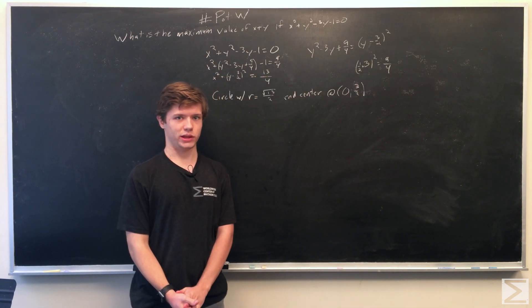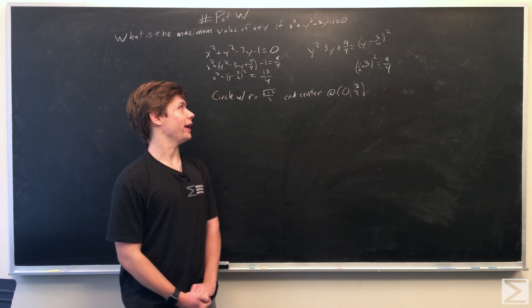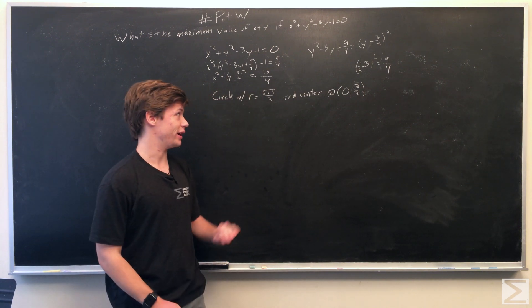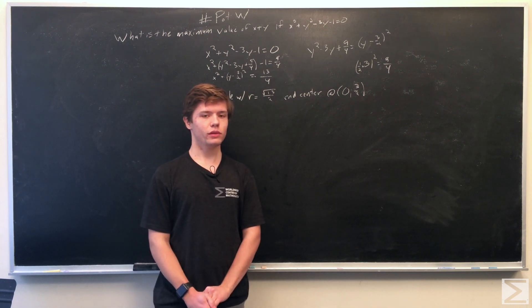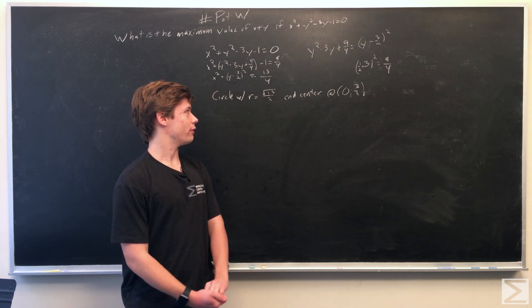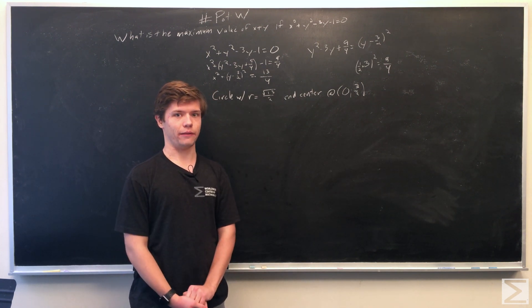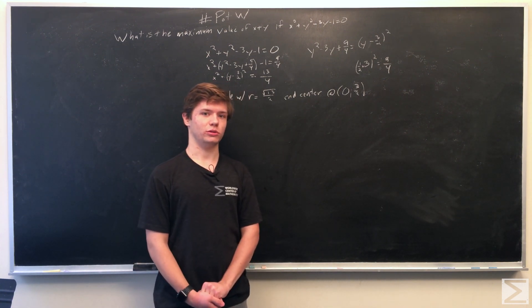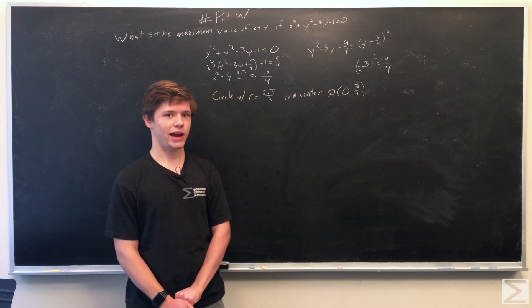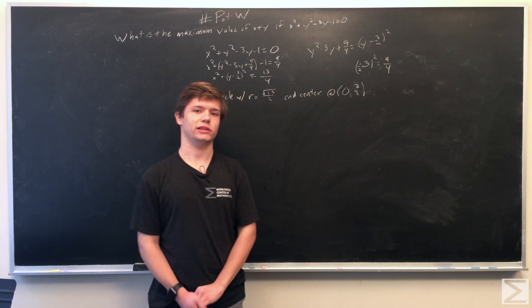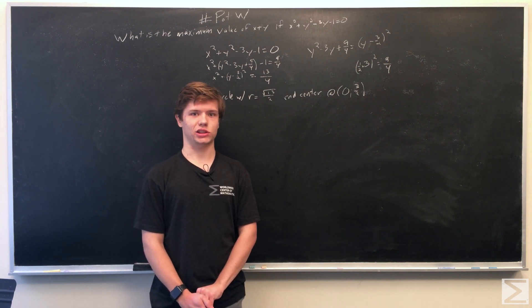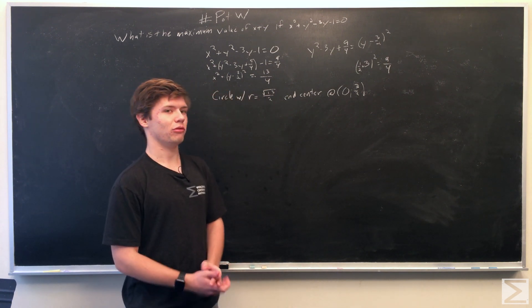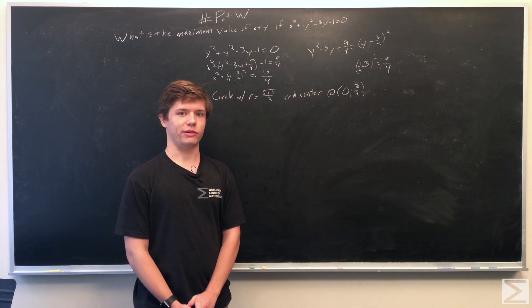Now that we have this information, we can plug in a parametric value for x and y. The circle has a radius of radical 13 over 2. So we set x equal to radical 13 over 2 times cosine of theta, and y equal to radical 13 over 2 times sine of theta plus 3 halves, because the circle is centered at (0, 3 halves).